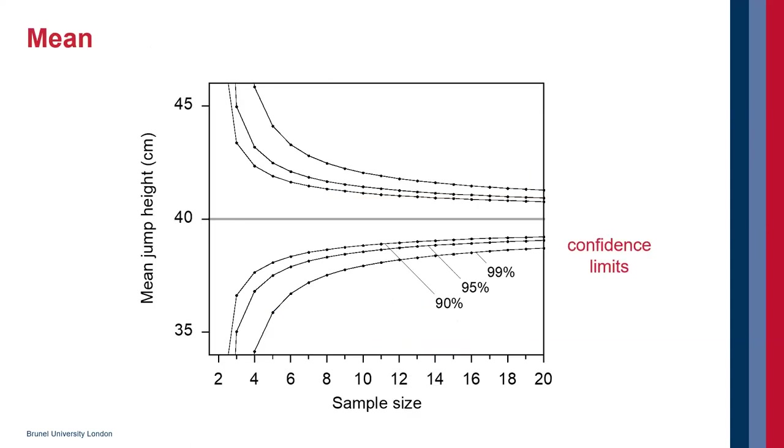Here's an example of how the mean depends on sample size. In this diagram, we've got a jump height with a mean value of about 40 centimeters. And these are the confidence limits. It does what we expect: as you increase the sample size, the confidence limits become smaller. And we also notice when there's really small sample sizes, these confidence limits can be quite large.